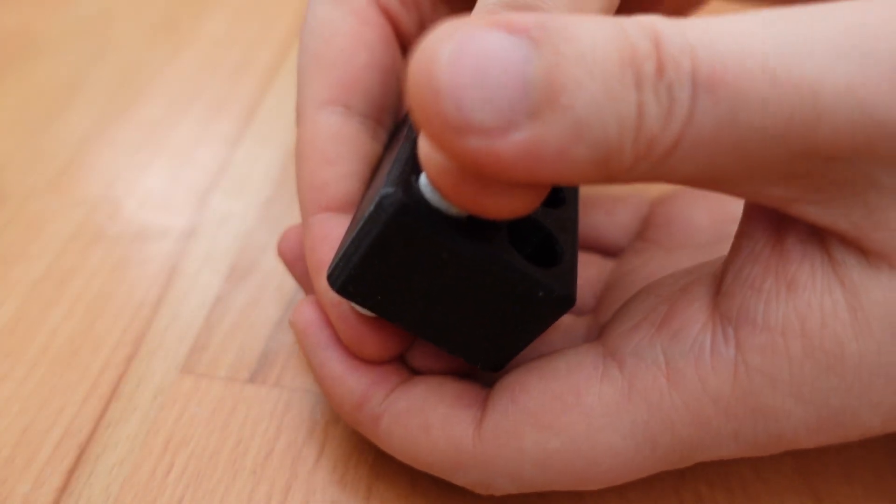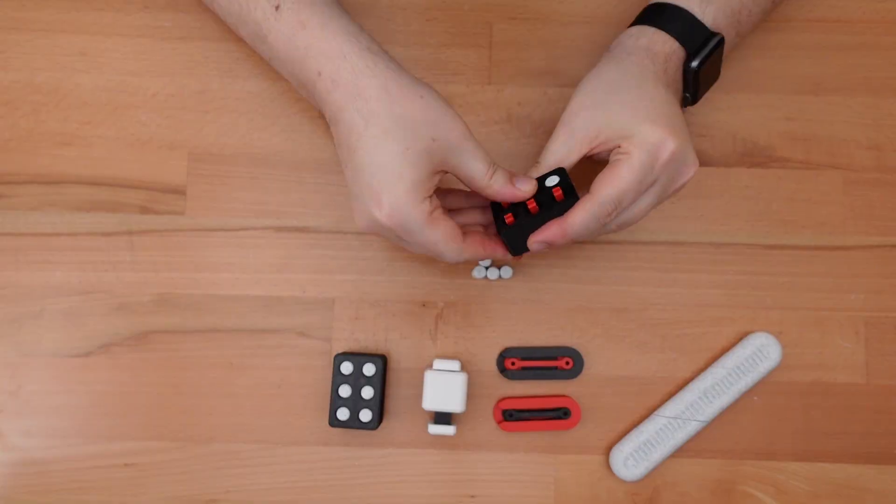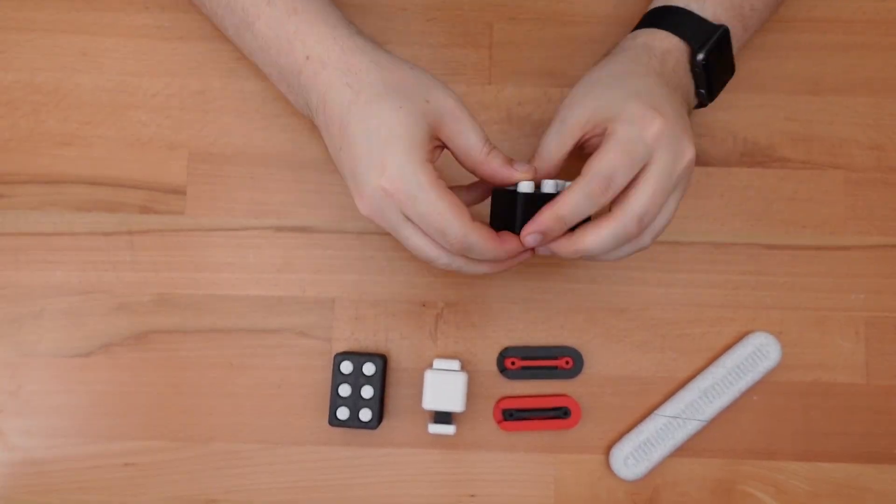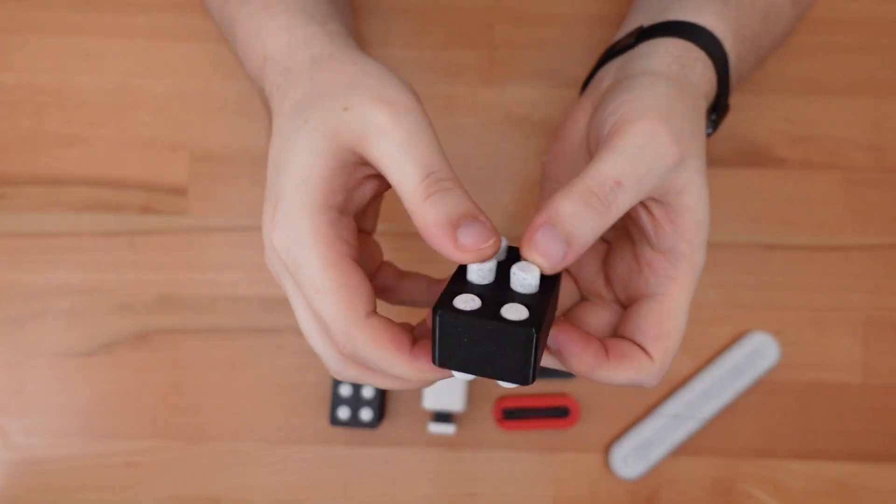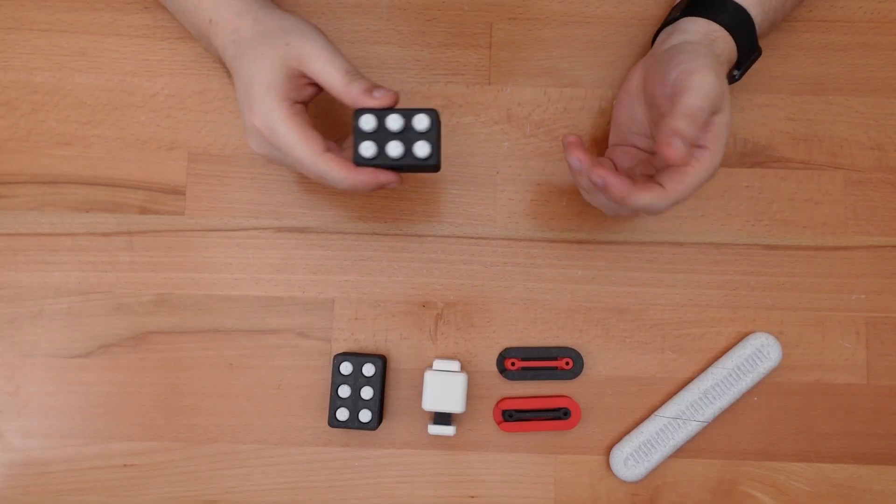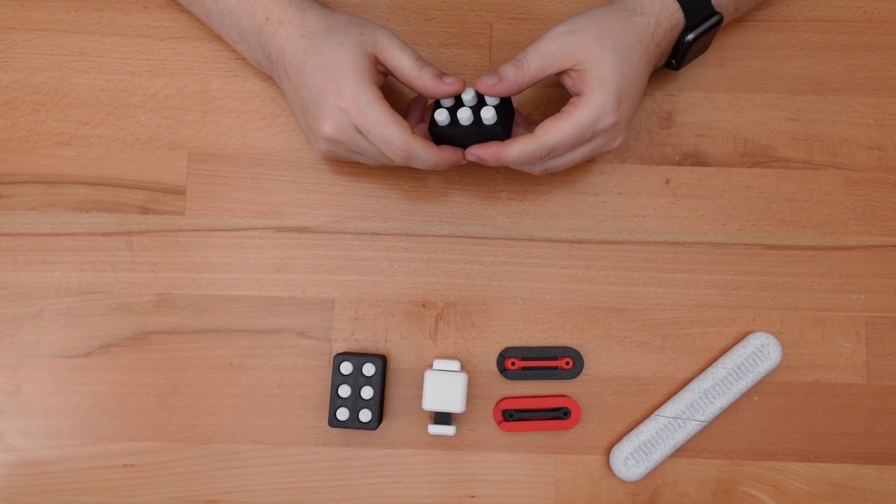And now press-fit the other button cap. Repeat this process for the other braille pegs. And then you're done. Whether you plan to use this as a teaching aid, or just another fidget, I hope people enjoy this design.